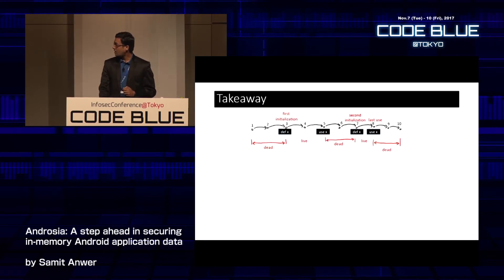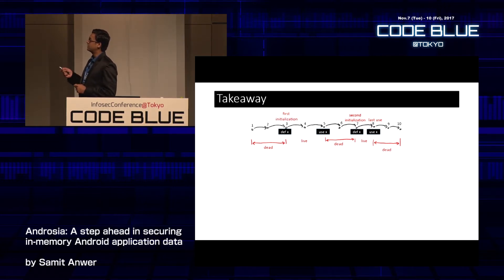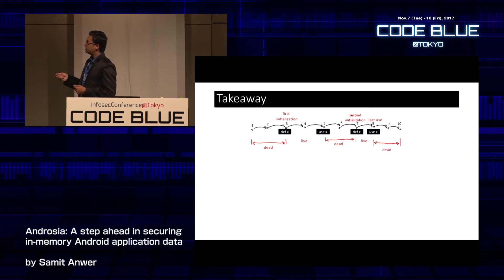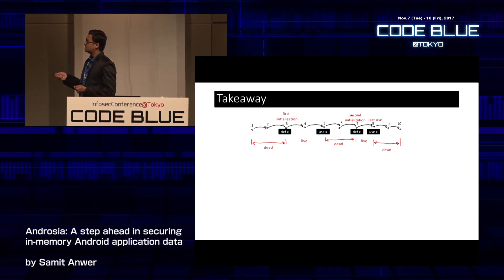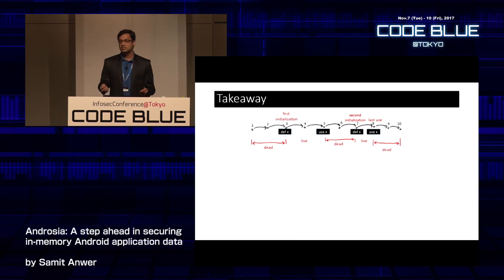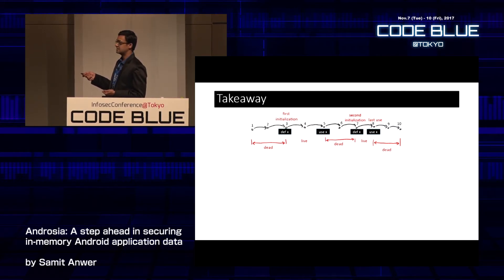Let me explain the takeaway with a diagram. Assume statements 1 to 10 represent a single flow of your program. Variable x is defined at statement 3, initialized with an object. Before statement 3, x has never been defined, so it is dead. At 3 it is defined and subsequently used at statement 5, so x is live between statements 3 and 5.